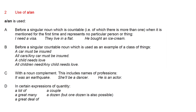A or AN is used with a noun complement, including nouns of professions, such as: it was an earthquake; she will be a dancer. Also in certain expressions of quantity, such as a lot of, a great many, a great deal of, a couple, and a dozen. These things are countable or discrete.